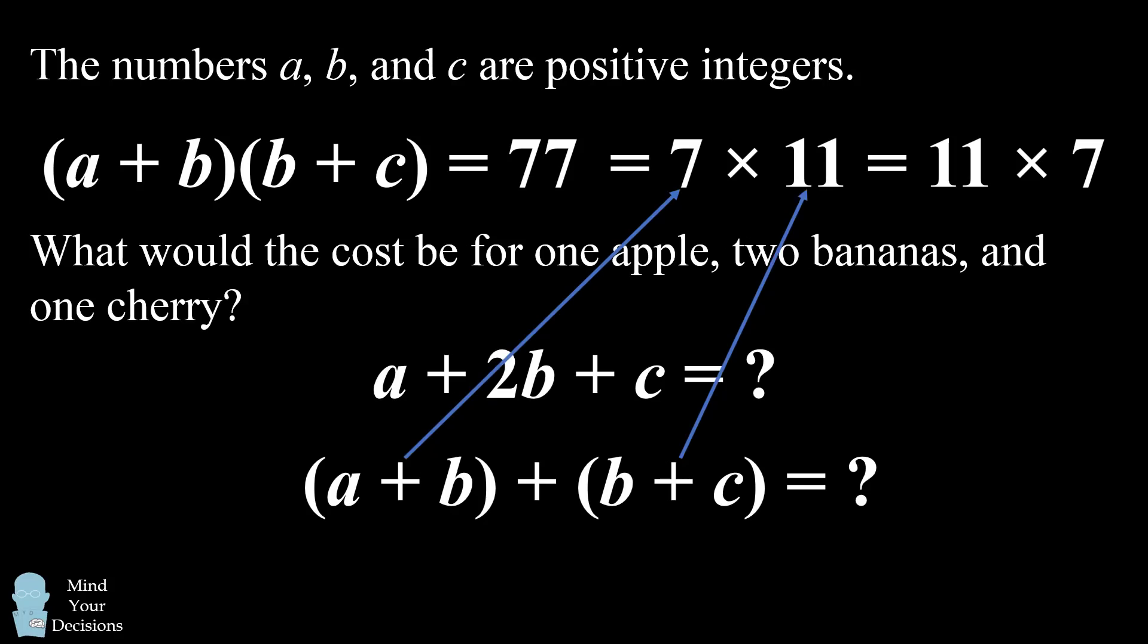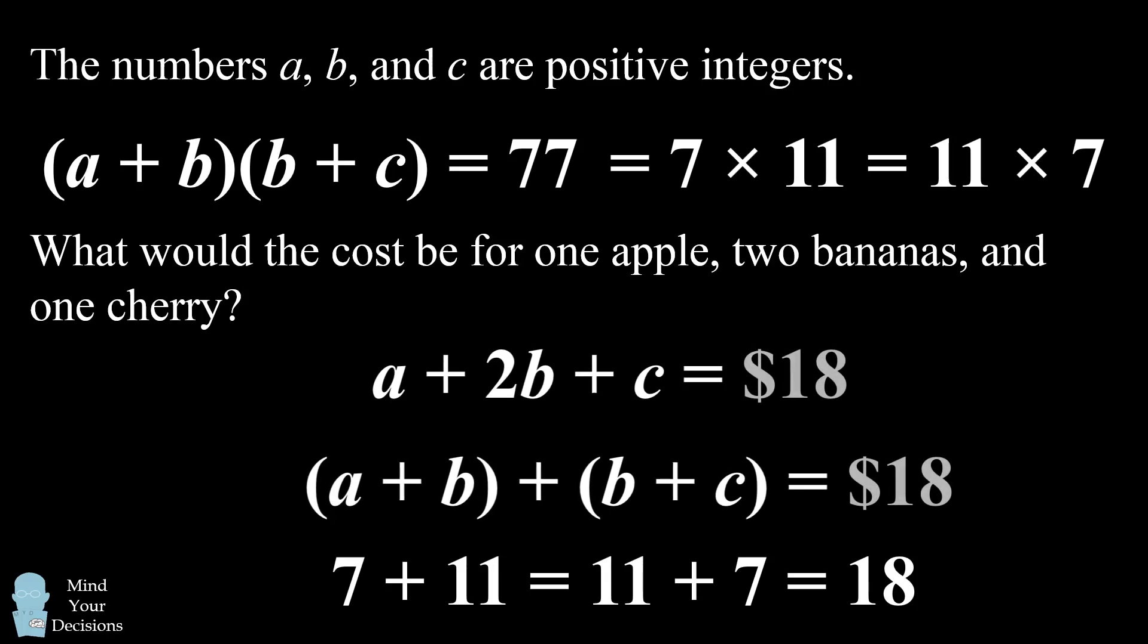Well, it could either be 7 and 11, or it can be 11 and 7. And either way, it's going to be a total of 18. And that's our answer. The cost will be $18.